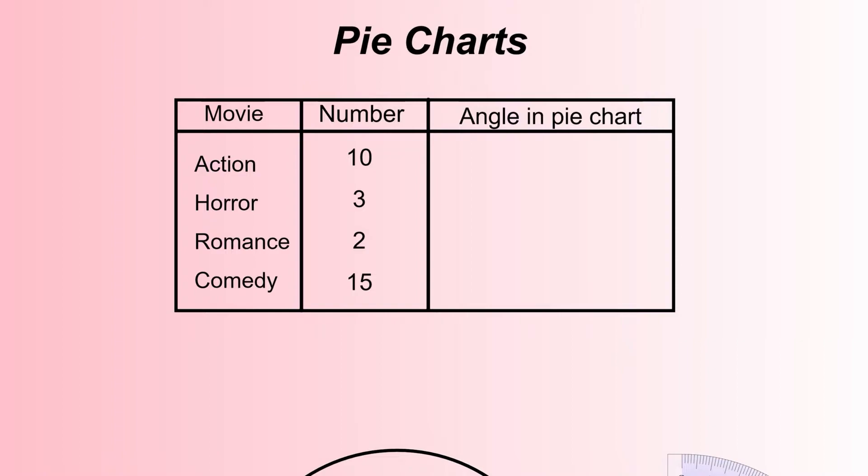What we're going to do is convert this information into useful data that we can use to construct a pie chart. The key thing is pie charts are always out of 360 degrees, so when we calculate our angles for the pie chart, they should add up to 360. That'll tell us we've got everything right.